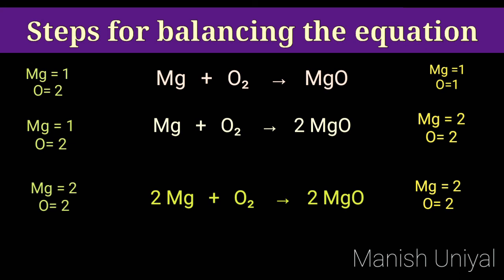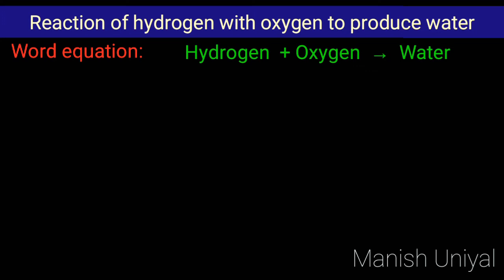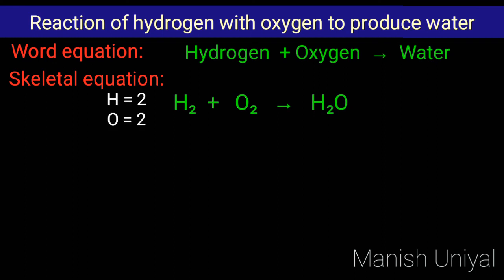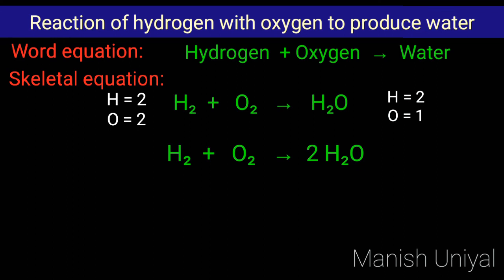In this way, the balanced chemical equation is: 2Mg + O₂ → 2MgO. Now, reaction of hydrogen with oxygen to produce water. The word equation is: hydrogen plus oxygen gives water, and the skeletal equation is: H₂ + O₂ → H₂O. In the reactant side, there are 2 hydrogen atoms and 2 oxygen atoms, while in the product side, there are 2 hydrogen atoms and 1 oxygen atom. We can see hydrogen is 2 on both sides, but oxygen in the reactant is 2 and in the product is 1. So we need to balance oxygen by writing 2 as a coefficient in front of H₂O. Our equation becomes: H₂ + O₂ → 2H₂O.